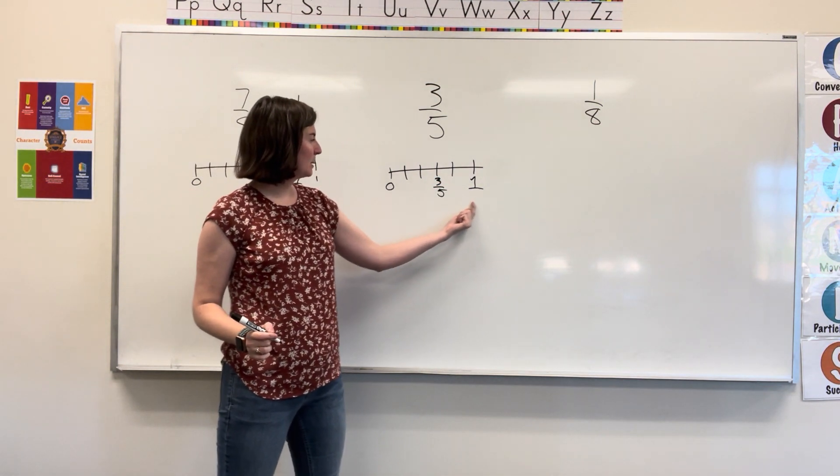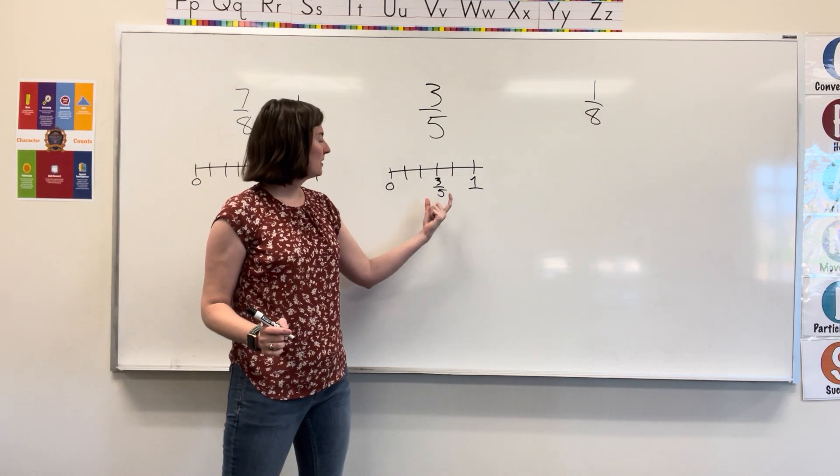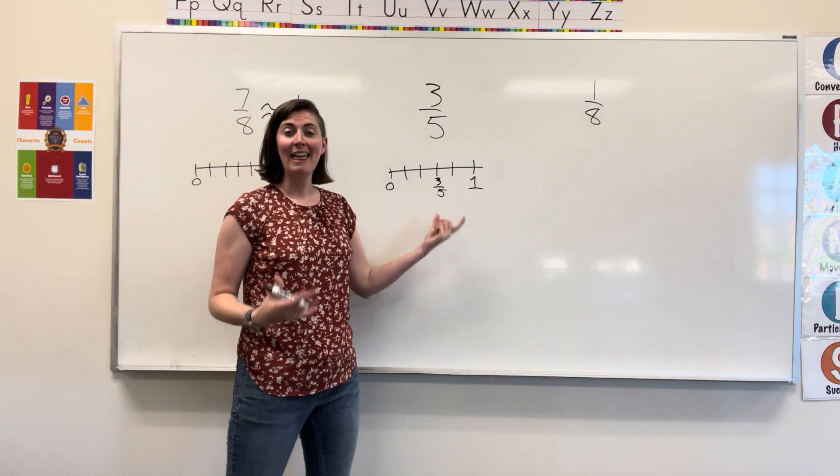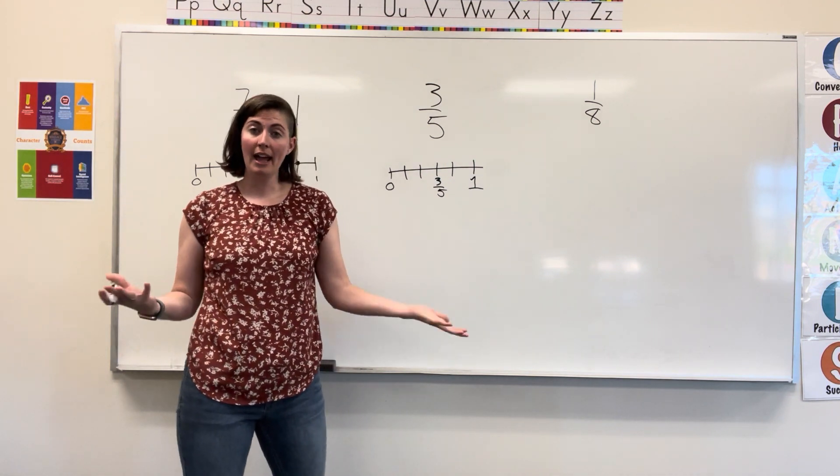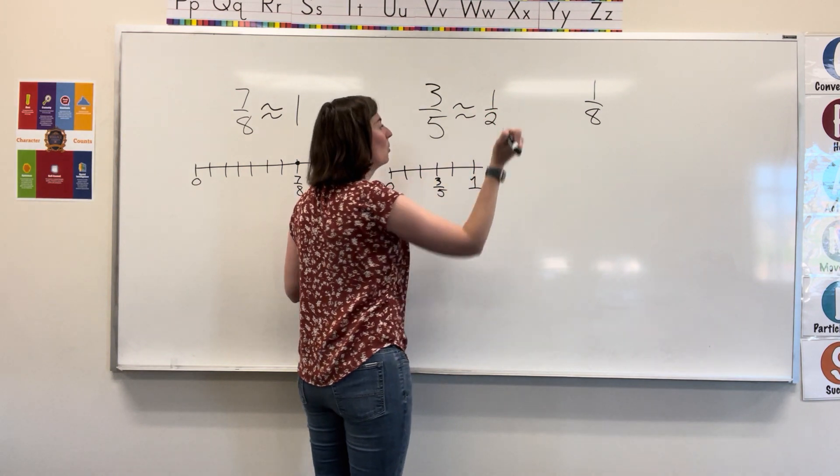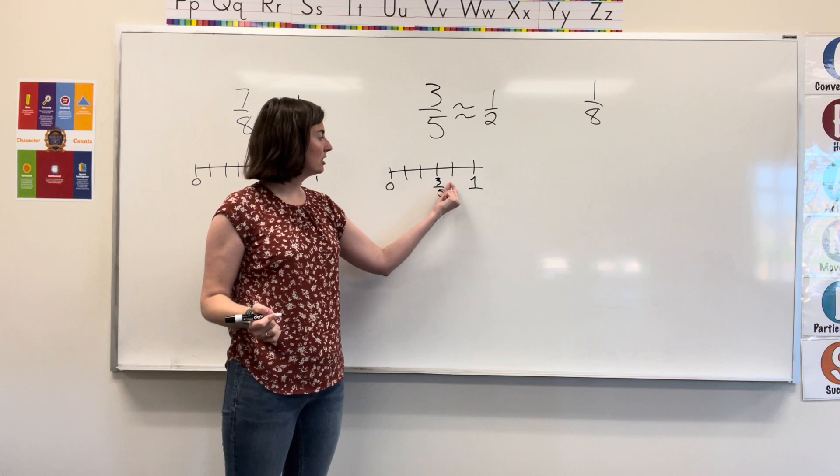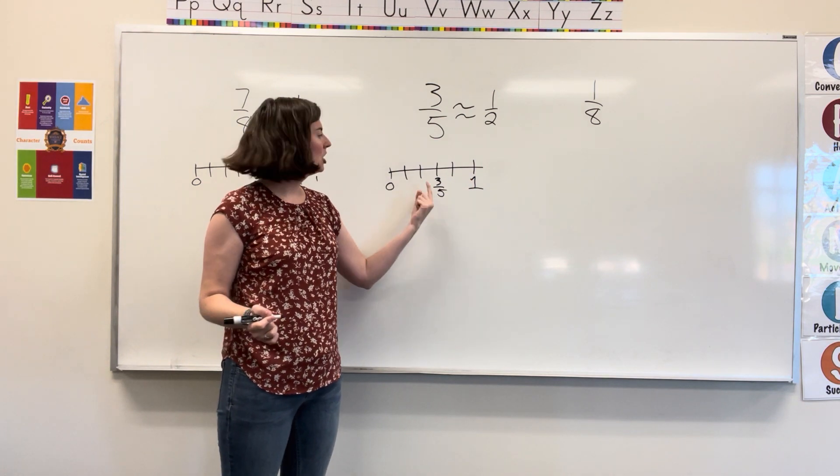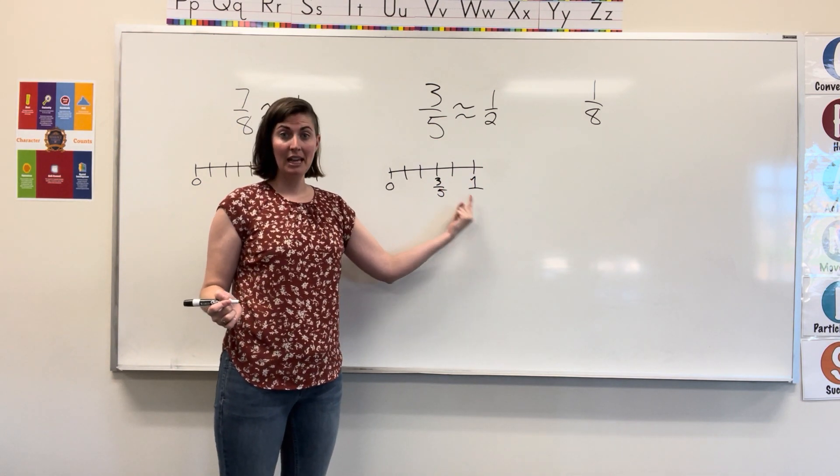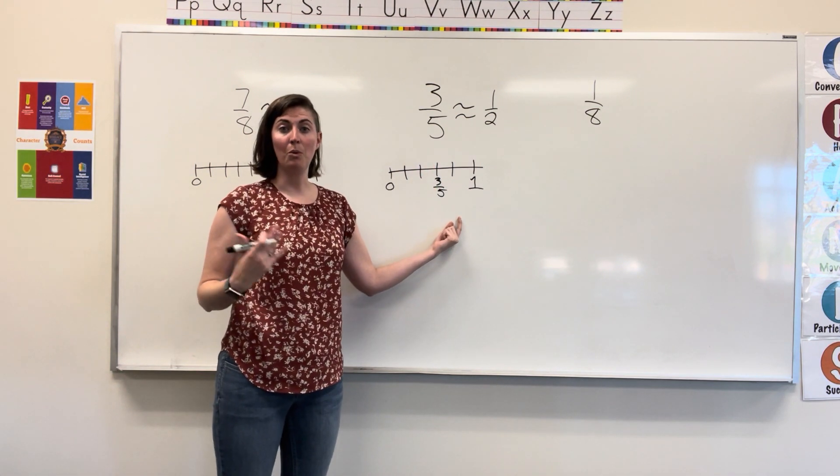Three fifths. It's pretty close to the center. If it's pretty close to the middle, that's going to be about one half. So, we have approximately one half. Now, if you're unsure, if it looks like it's a little bit closer to one than the other, you can round up. In this case, it was much closer to the middle, so I went with one half.